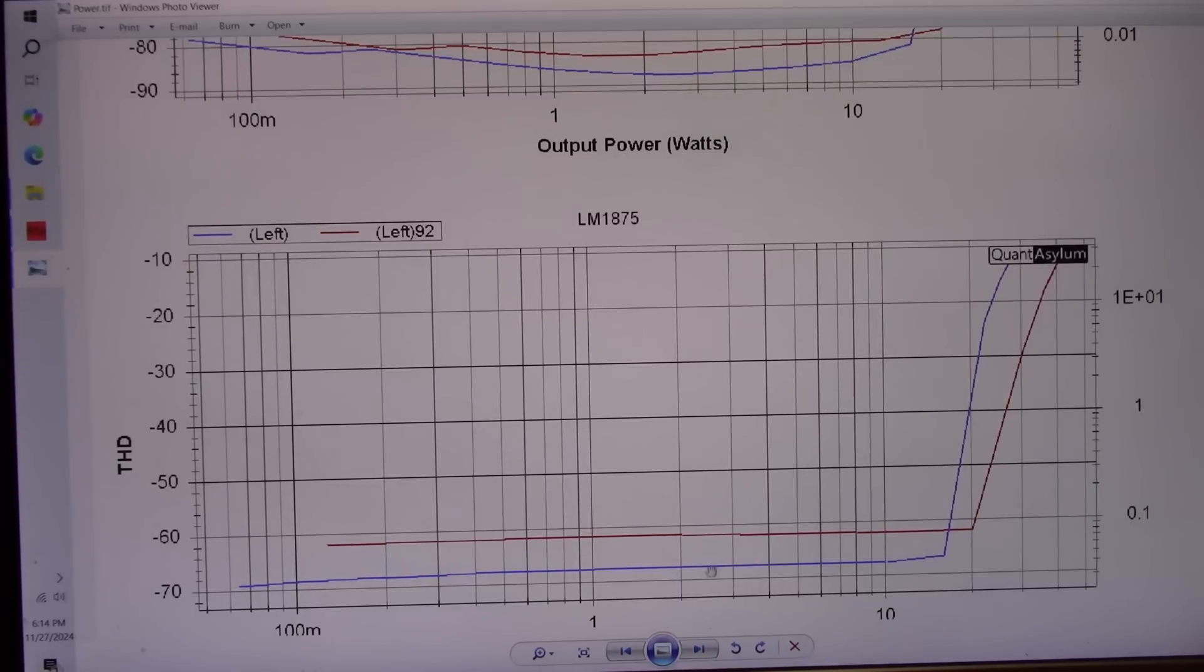And of course, we have pretty sharp knees with the clipping with the 1875. And we're going above 0.1% distortion at 8 ohms. Oh, I'm going to say that's probably around 15 or 16 watts.